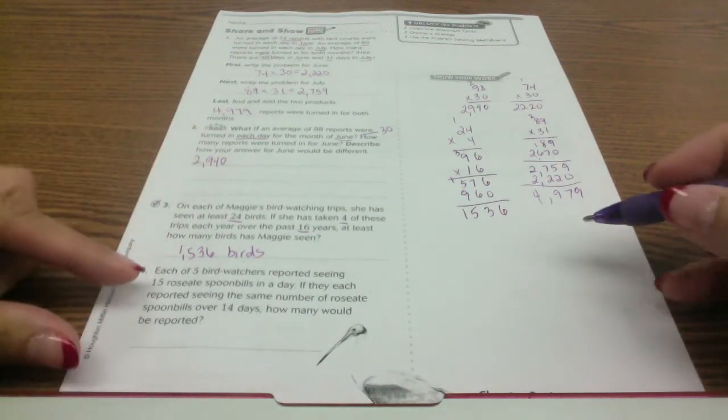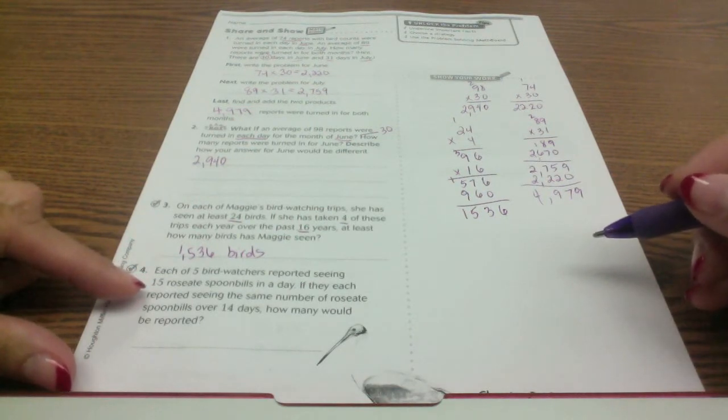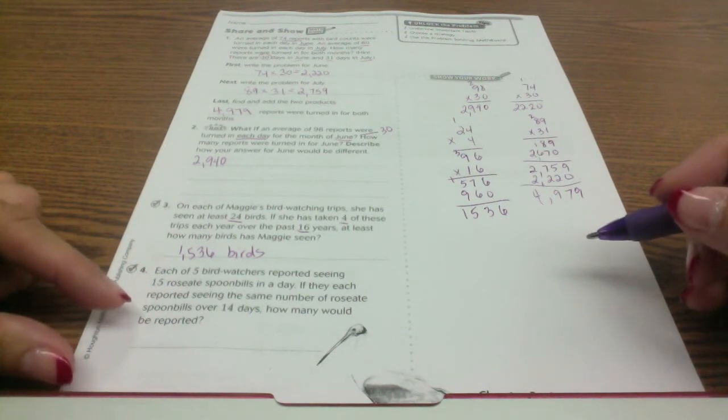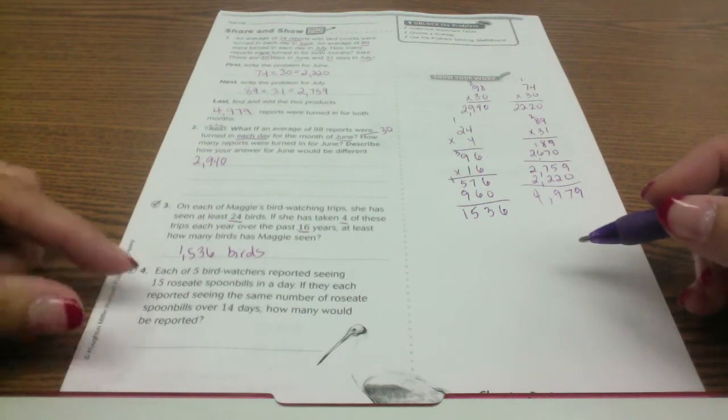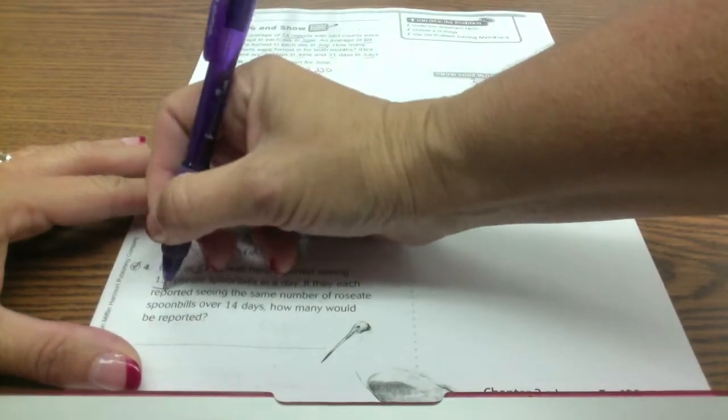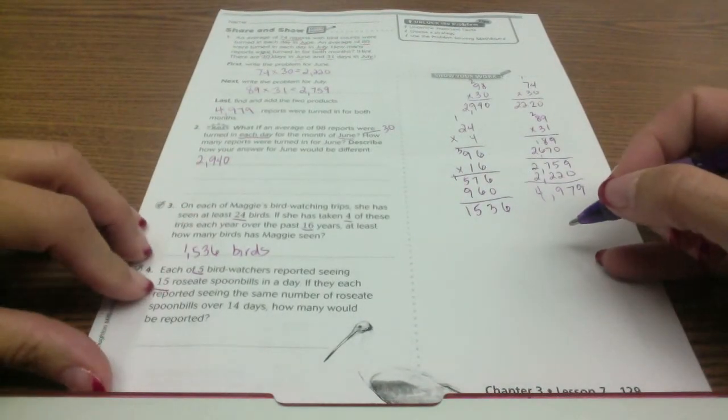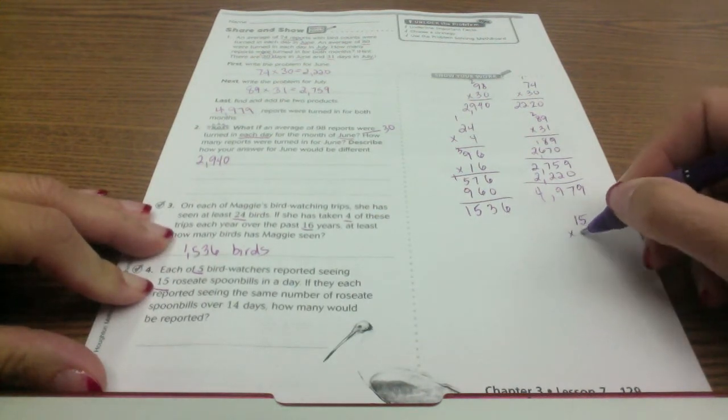And then the next one, each of five bird watchers reported seeing 15 roseate spoonbills in a day. If they each reported seeing the same number of spoonbills over 14 days, how many would be reported? So five bird watchers each see 15 per day, so I'm going to find out the total number of birds they see per day. So I have 15 times 5.